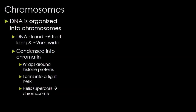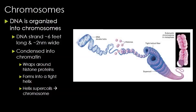In eukaryotes, nuclear chromosomes are packaged by proteins into a condensed structure called chromatin. This allows the very long DNA molecule to fit into the cell nucleus. The structure of chromosomes and chromatin varies through the cell cycle. Chromosomes are even more condensed than chromatin and are an essential unit for cellular division because the long strands of chromatin can get knotted extremely quickly.